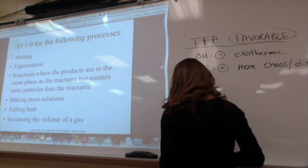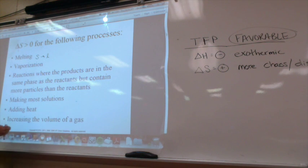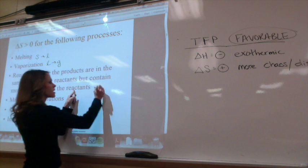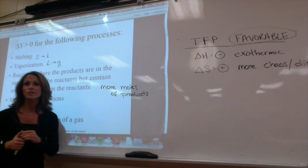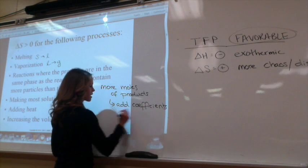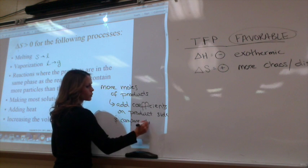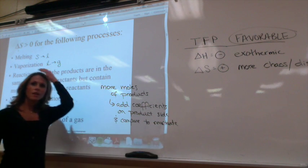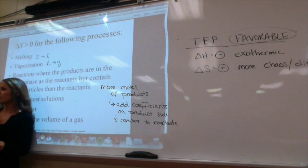Processes where delta S is greater than zero include: melting (solid to liquid), vaporization (liquid to gas), and reactions where the products are in the same phase as the reactants but contain more particles — meaning more moles of products. To determine this, add the coefficients on the product side and compare to the reactant side. This only applies if they're in the same phase. If there's a phase change, that is more significant than just counting particles.